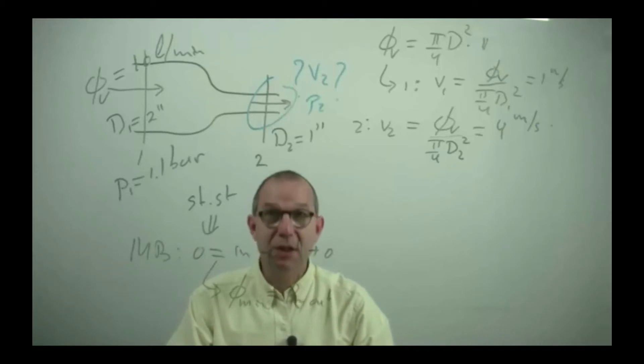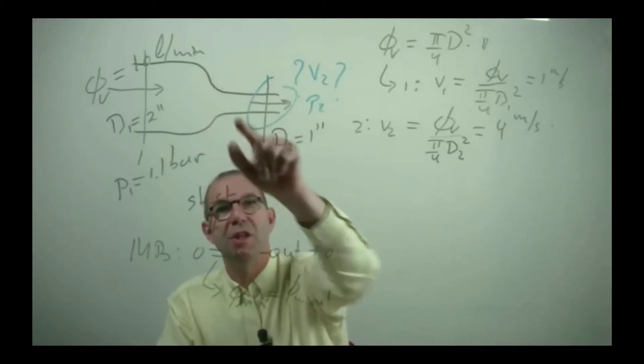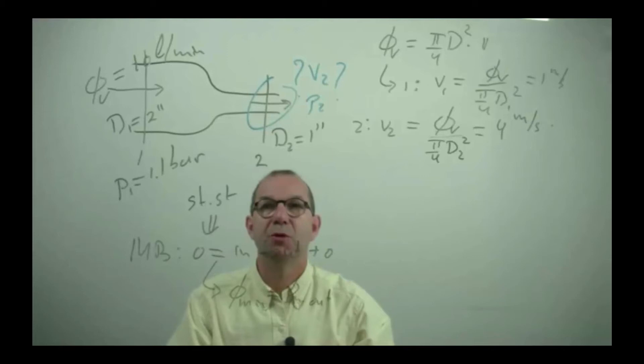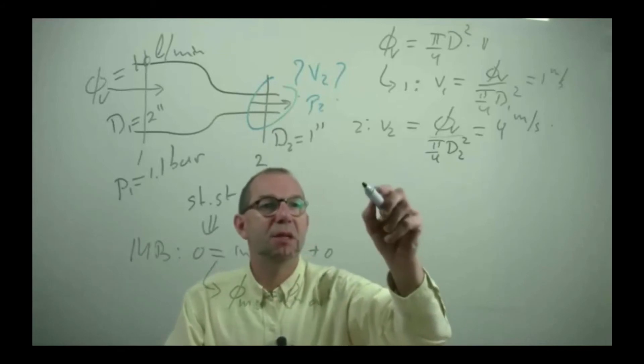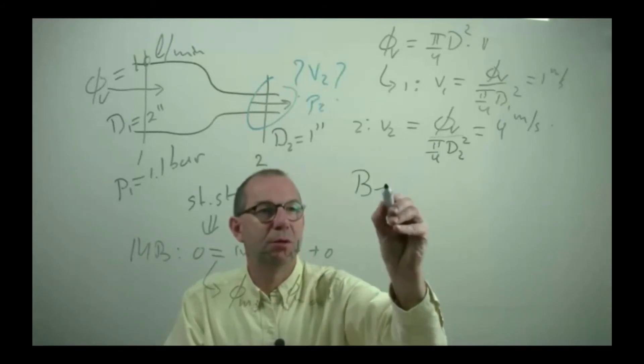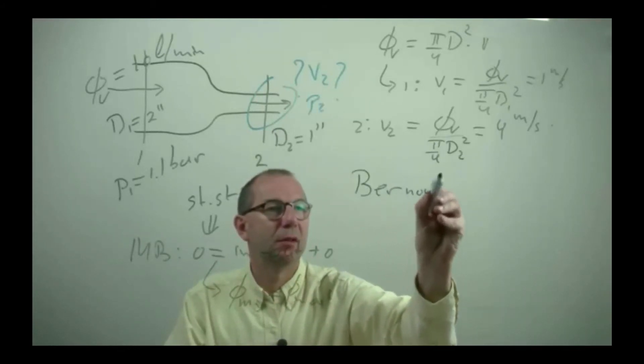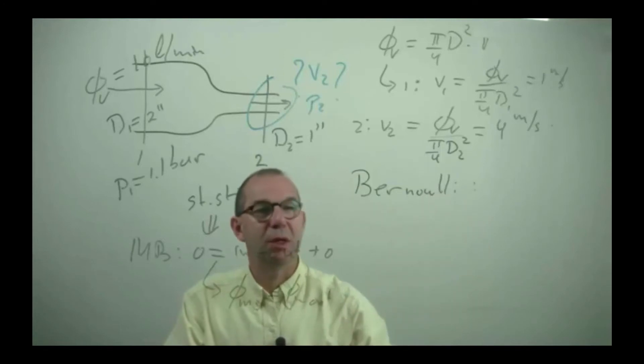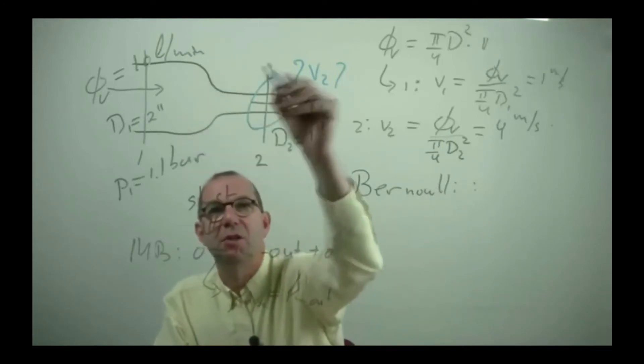Let's see how we do this. In this system we assume that this narrowing is gradual. So that frictional effects are small and can be neglected. That means that we can use Bernoulli's equation between point 1 and 2.